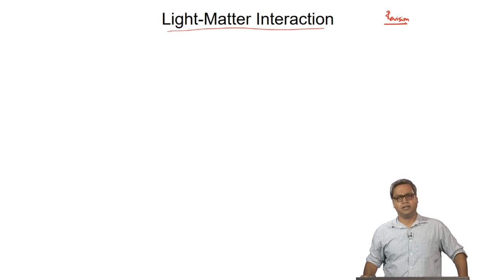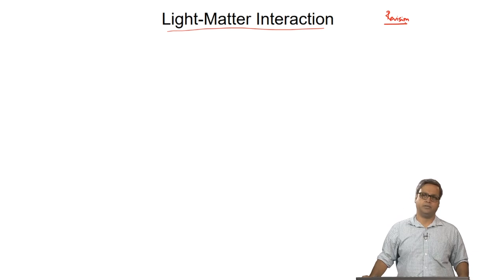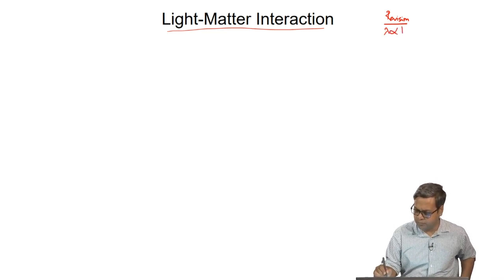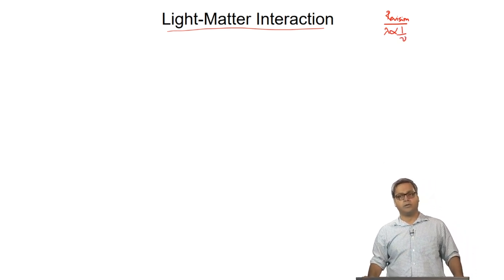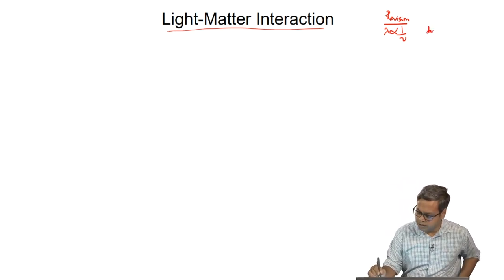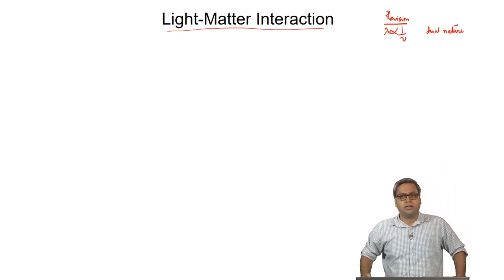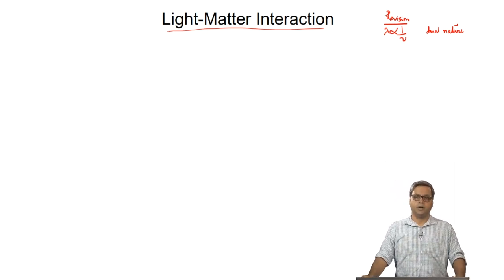In the very first lecture, we started by describing light as an electromagnetic wave. We learned what is wavelength, that is lambda, and its inverse relation to frequency — that is, wavelength is inversely proportional to frequency. From there on, we discussed about the dual nature of light. We have seen that according to the light quantum hypothesis of Einstein, light consists of photons.